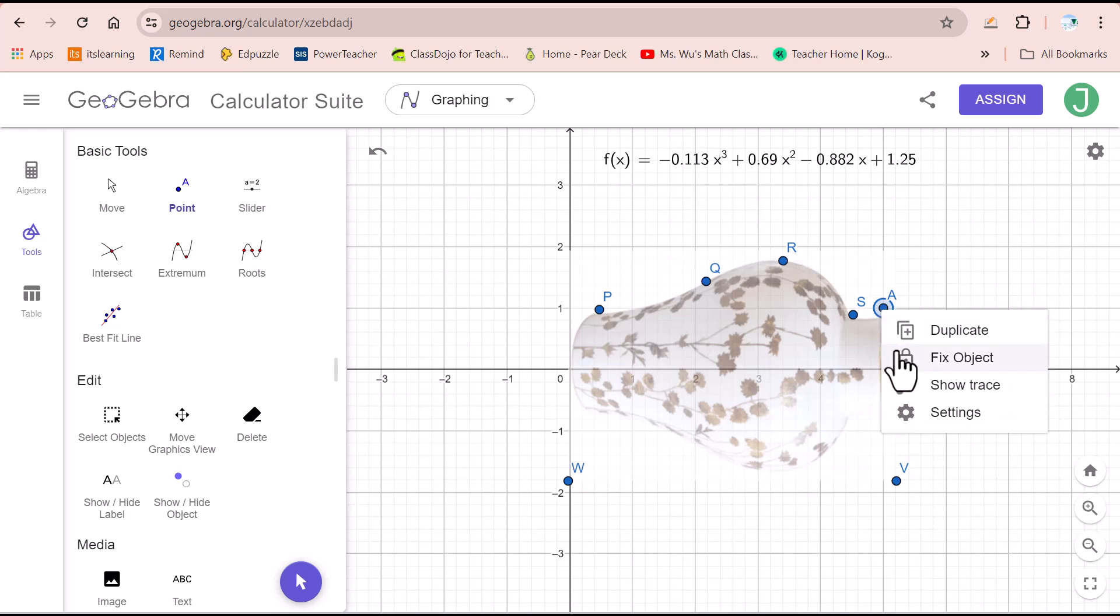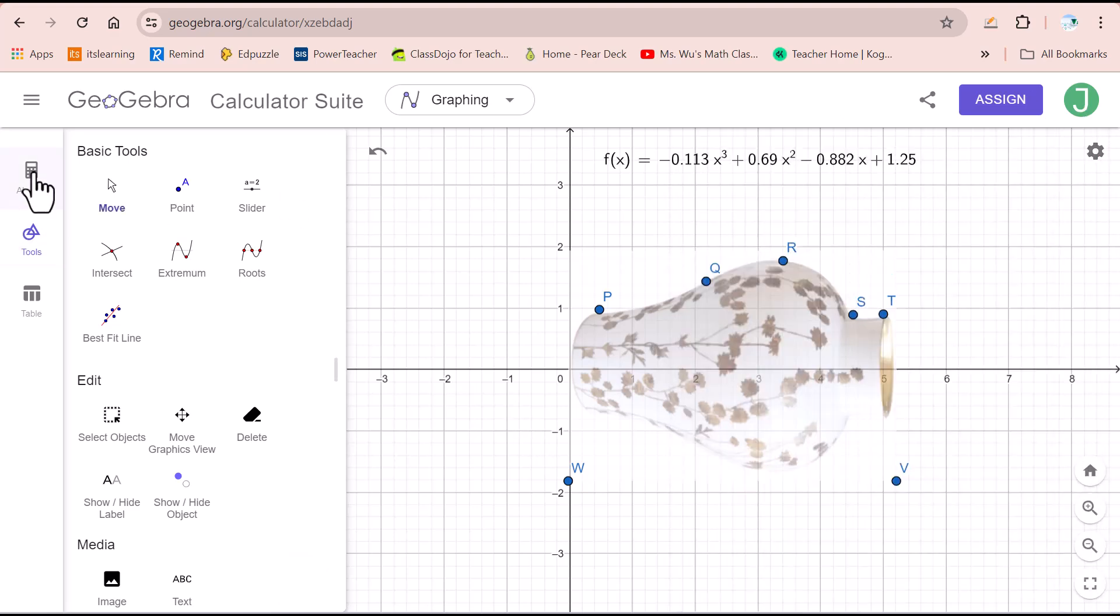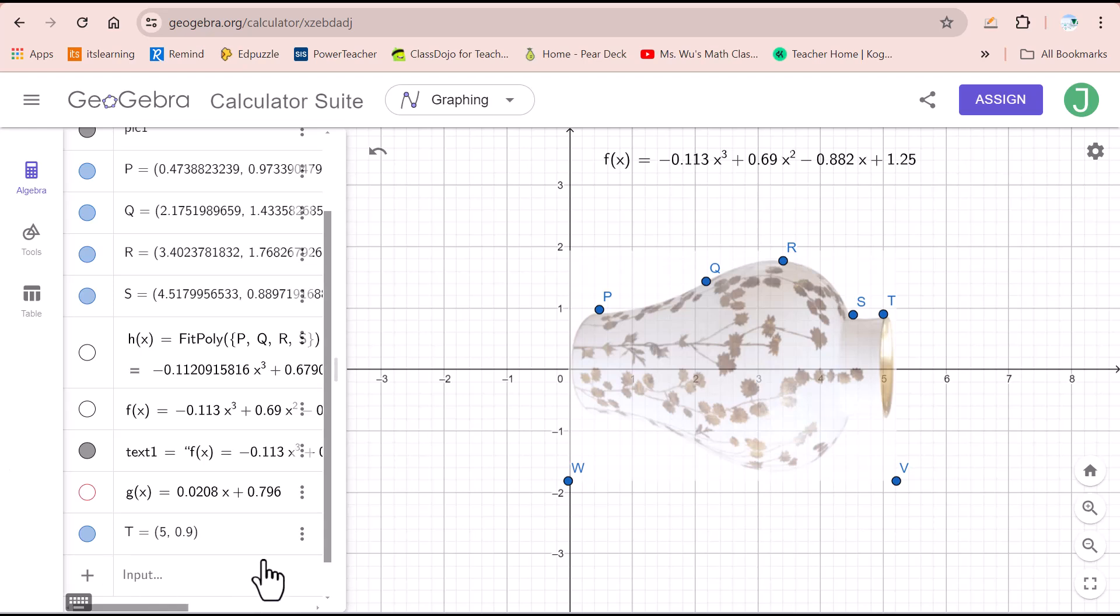Now right click, go to setting. We will change this point into T. Then click this algebra to get the coordinate of this T.